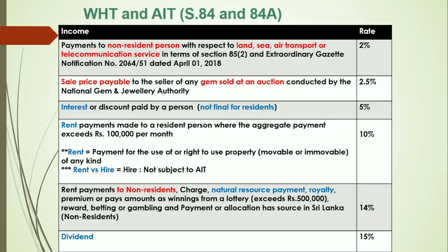The second item is also not new — it is available from the commencement date of the Act. It applies to the sale price payable to the seller of any gem sold at an auction conducted by the National Gem and Jewellery Authority. The National Gem and Jewellery Authority deducts 2.5% withholding tax on the sale price of relevant gems. There is no further tax liability on that payment because it is exempted. The National Gem and Jewellery Authority has to deduct this 2.5% tax from the commencement date of the Inland Revenue Act.